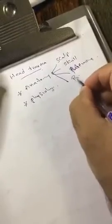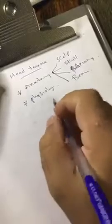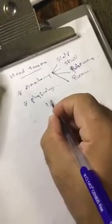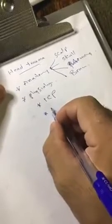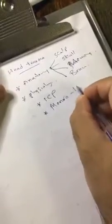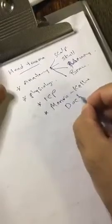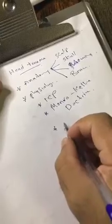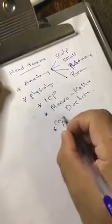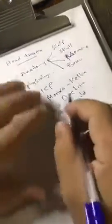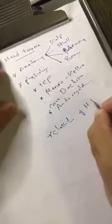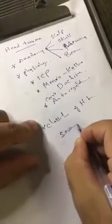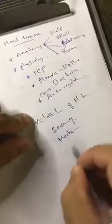And the meninges, and the brain. For physiology, we will discuss intracranial pressure — what is normal, what is abnormal. We will talk about the Monroe Kelly Doctrine, and cerebral autoregulation. Then we will do the classification of head trauma: according to severity, according to mechanism, and according to morphology.